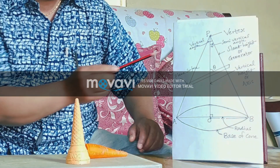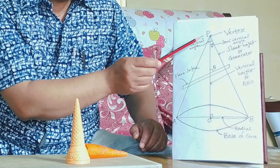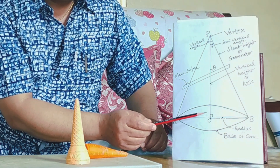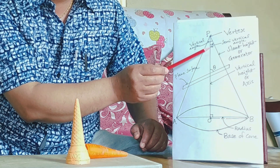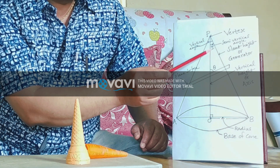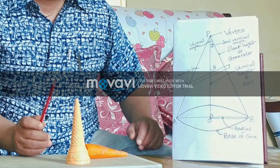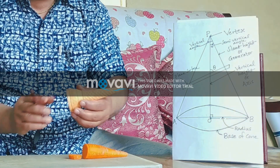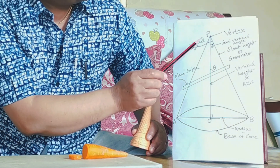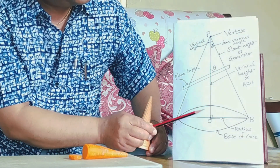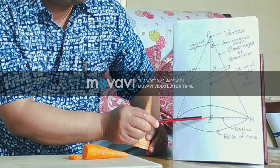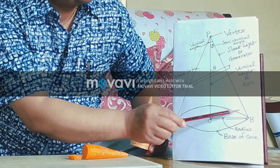The vertical angle of the cone is divided into two equal halves by the axis. Each half is called the semi-vertical angle, which I denote by alpha in the figure. This angle alpha is the semi-vertical angle. Also, the vertical height is directly perpendicular to the diameter of the cone.